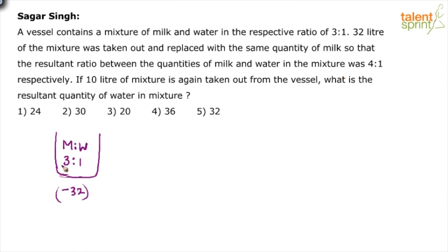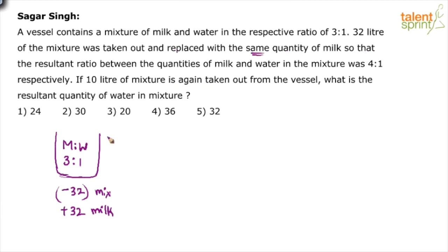So from this vessel, you have removed 32 liters of mixture and added 32 liters of milk. Replaced with the same quantity of milk, so that the resultant mixture — after doing this — will have milk and water in the ratio of 4 is to 1.